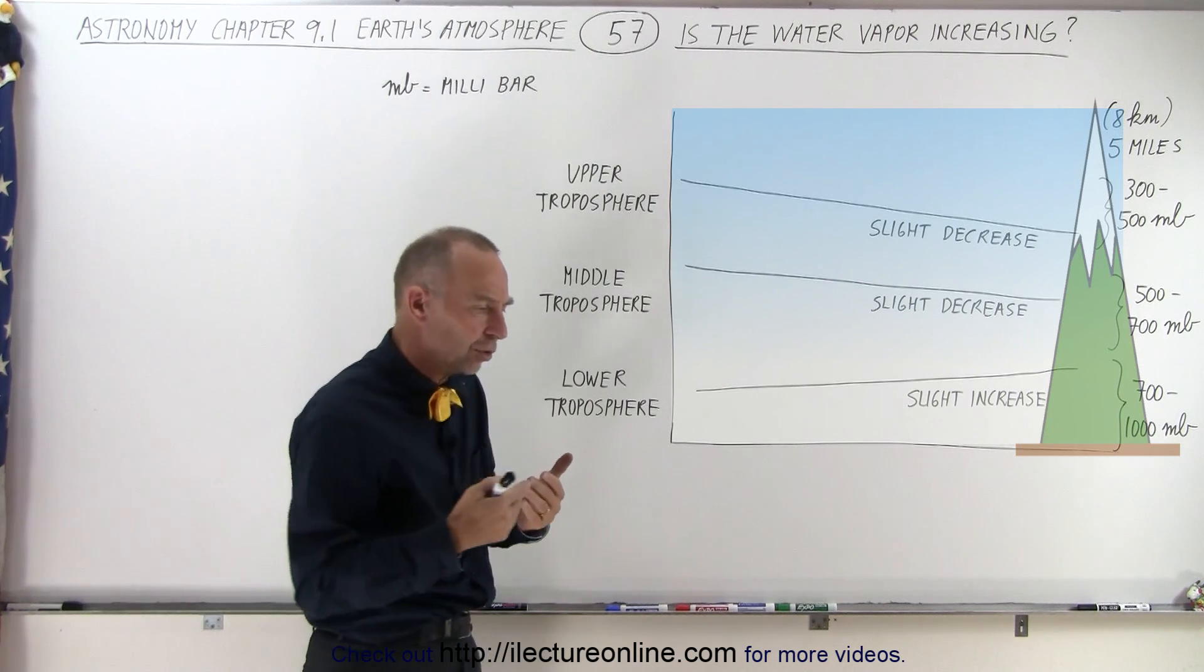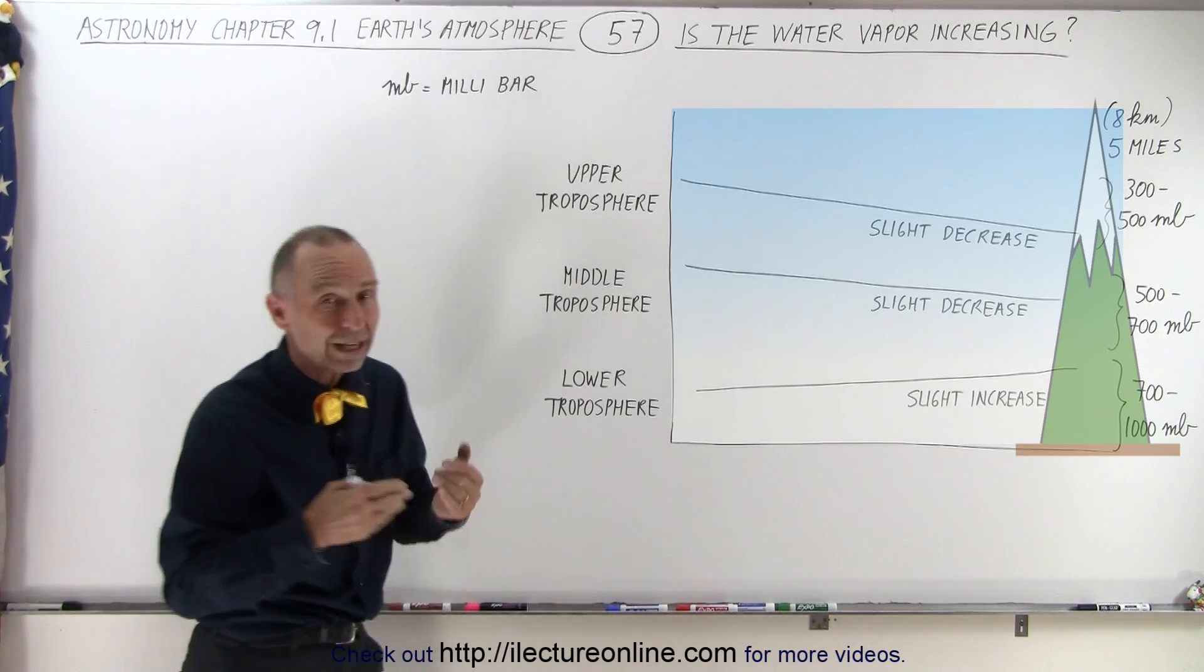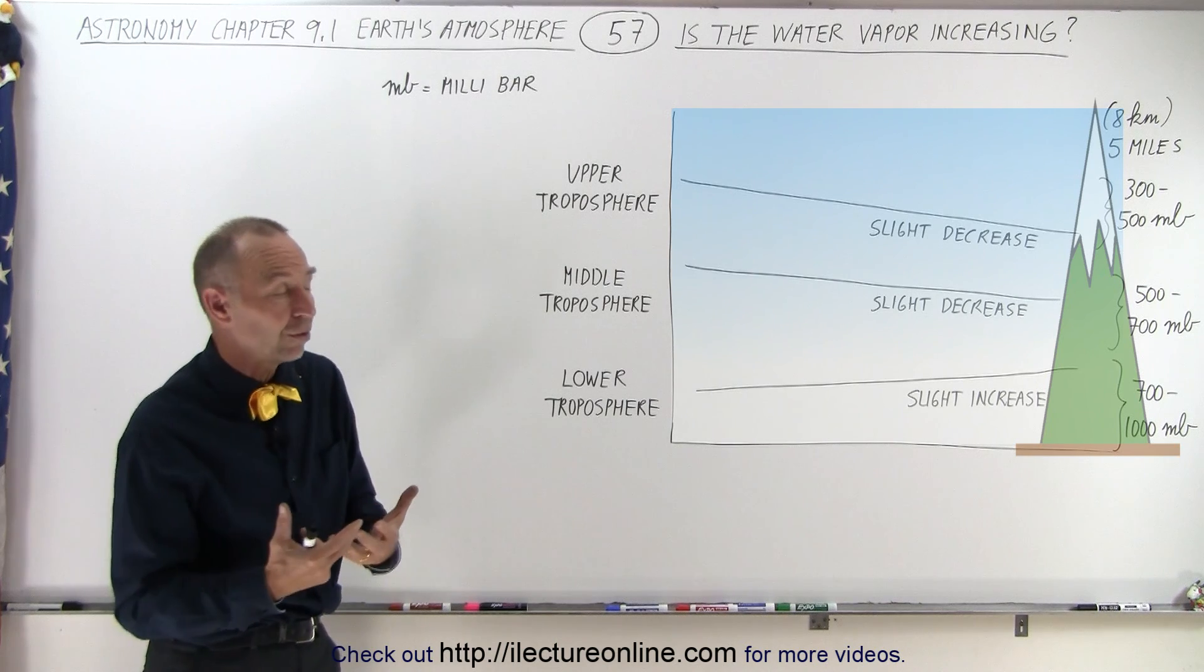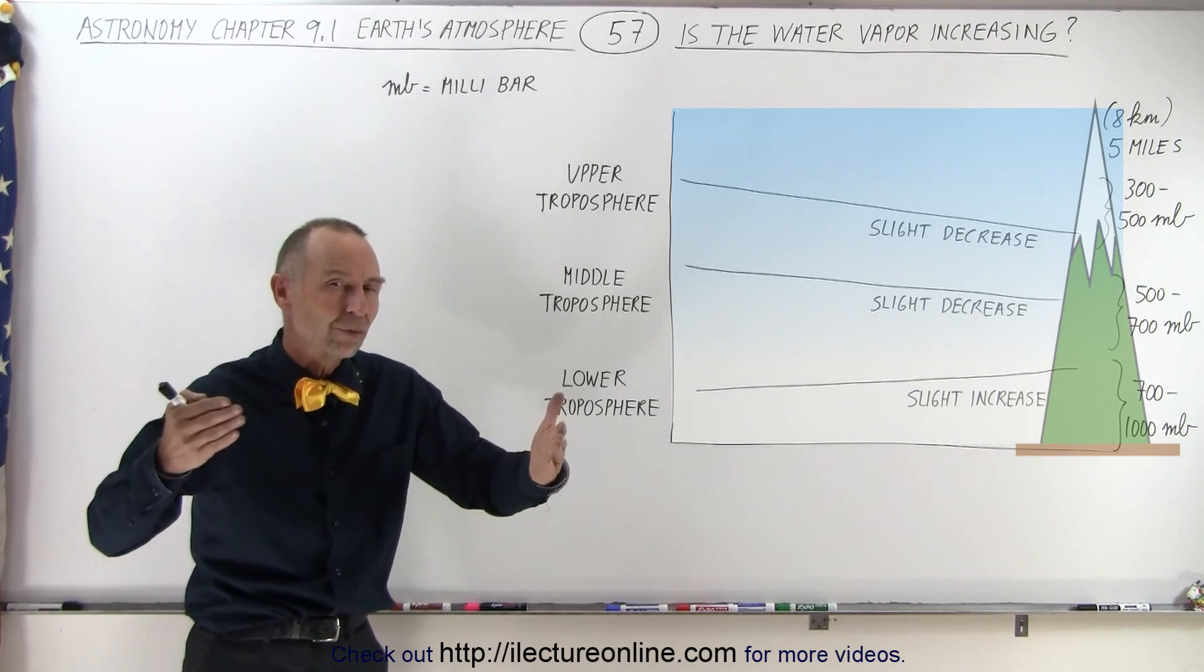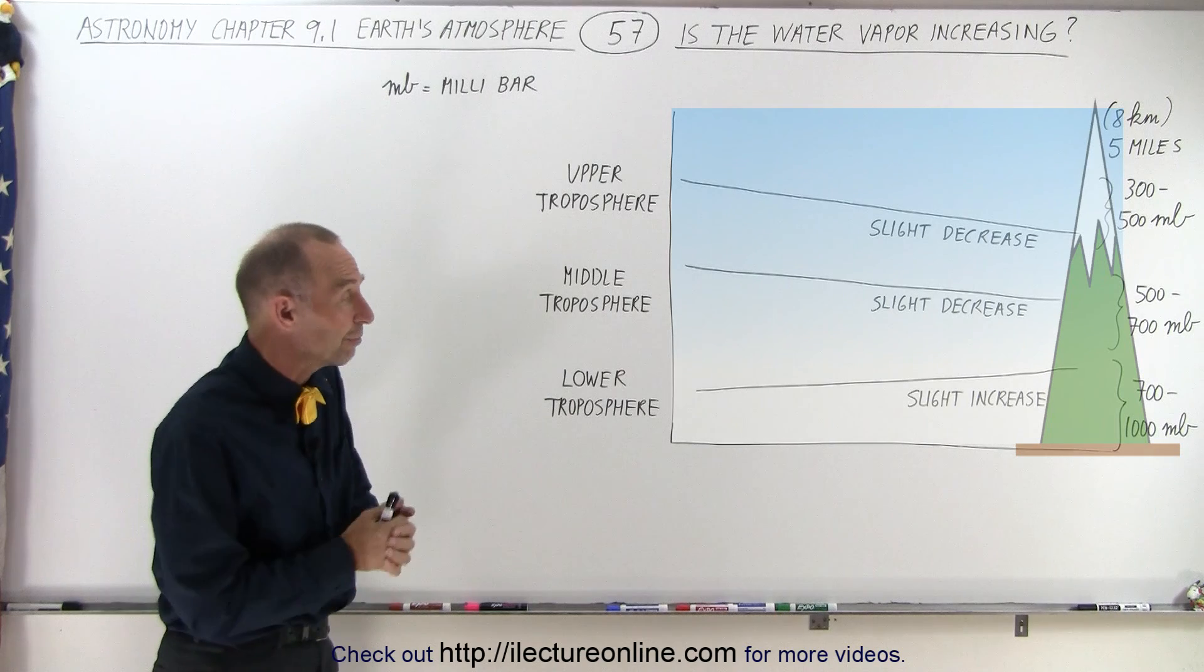Which means that if there's only a slight increase, we would not expect much of a feedback mechanism, which is maybe why the models and the actual temperatures seem to be diverting from one another.